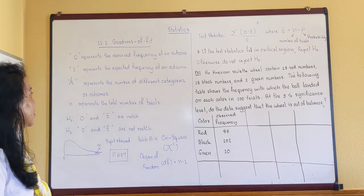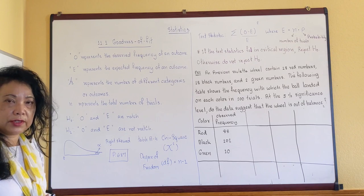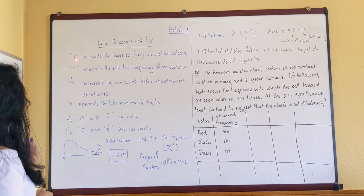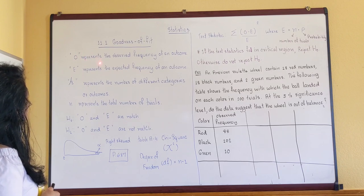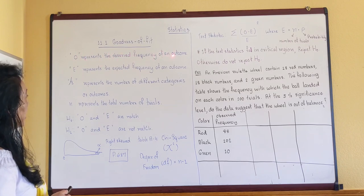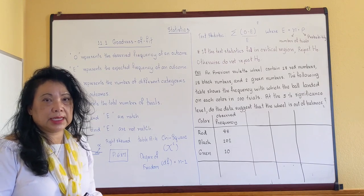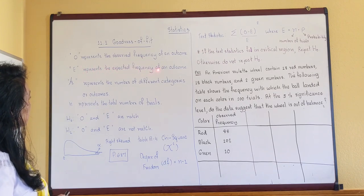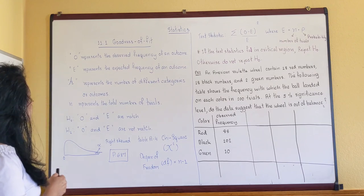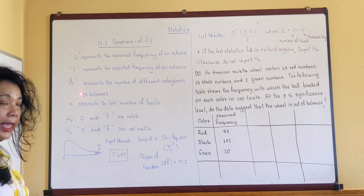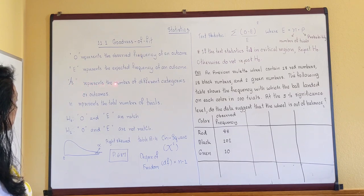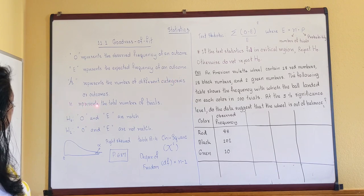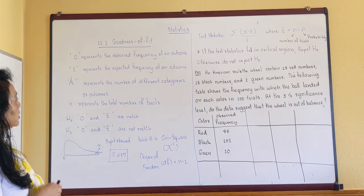Let's look at 11.1, which is called Goodness of Fit. Let's go over some important notation. Capital O represents the observed frequency of an outcome — in this section we deal with frequency. Capital E is the expected frequency of the outcome, so what you expect versus what you observe. Small k represents the number of different categories of an outcome, and n represents the total number of trials.